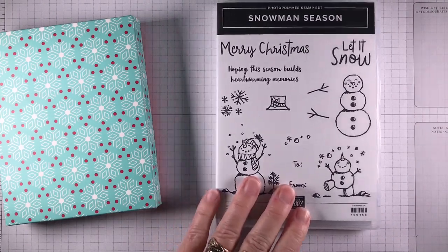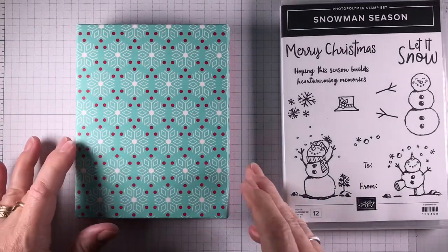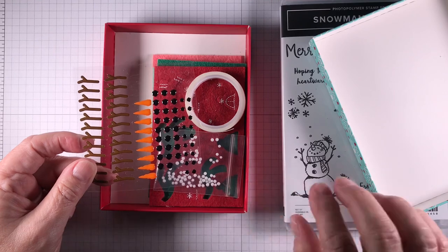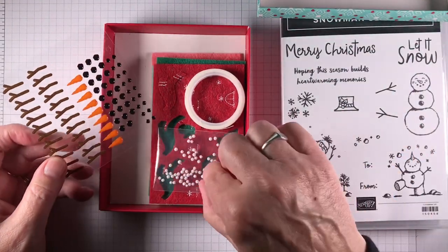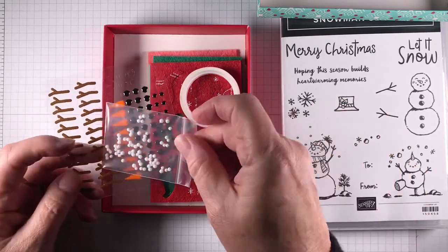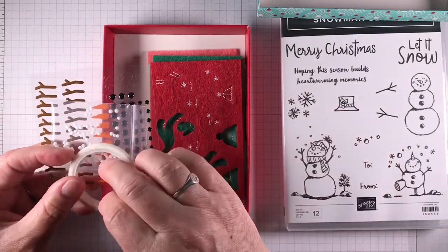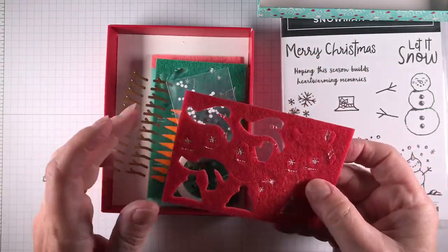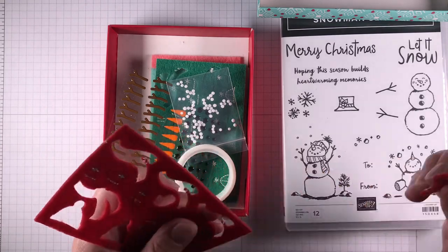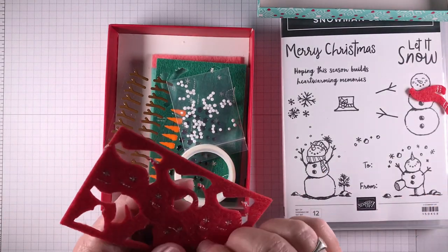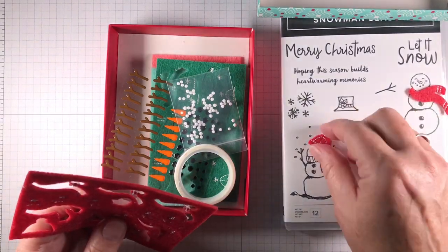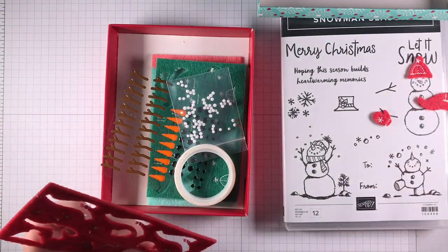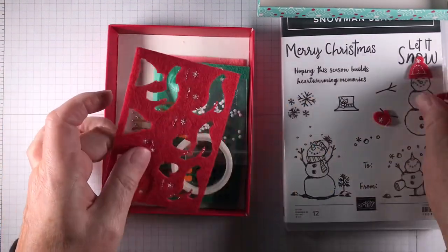Also along with that bundle or suite of products is the Let It Snow embellishment kit, and this comes with some things to build your snowman. This one here I'm going to make a shaker card out of. There's some glimmer paint or tape, washi tape, and then you get all these little fun embellishments—the scarf that goes on the little snowman, there's a hat you can put on either snowman like this, and also these cute little mittens. So that's a fun embellishment kit.